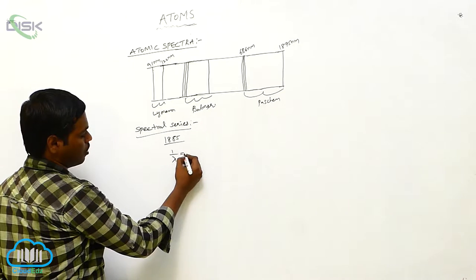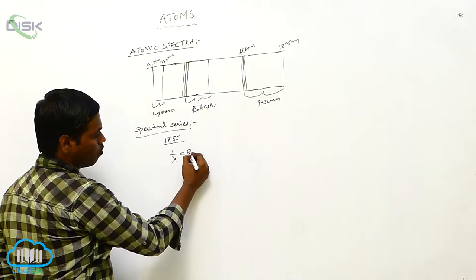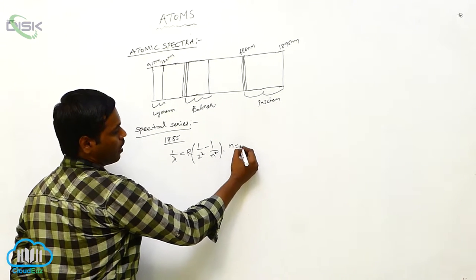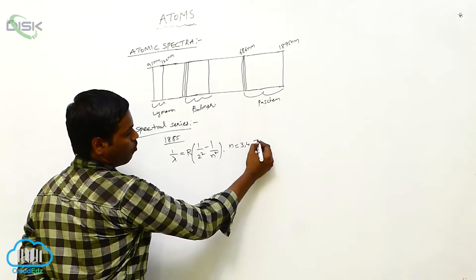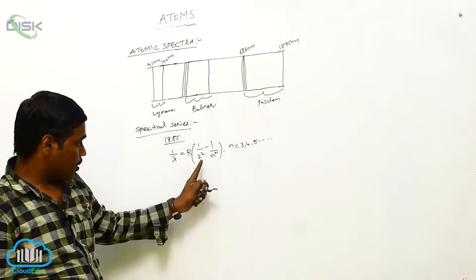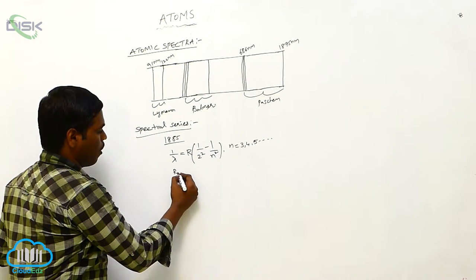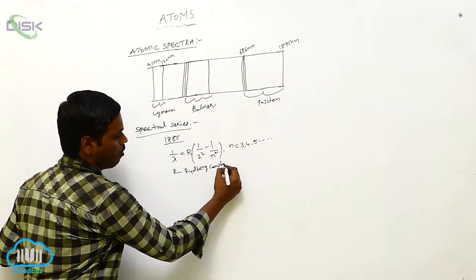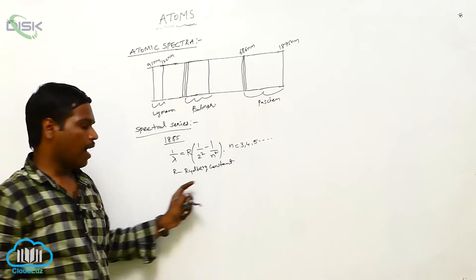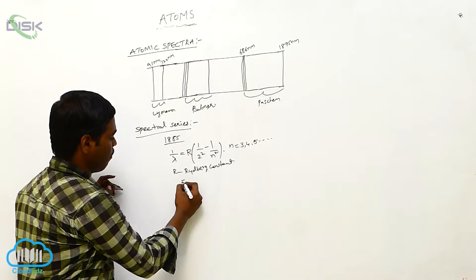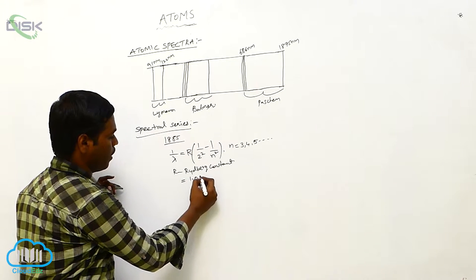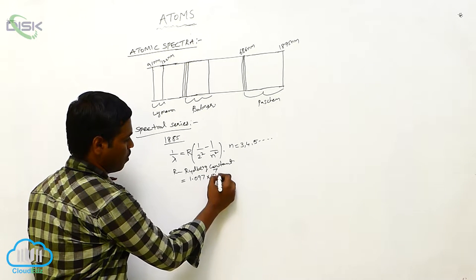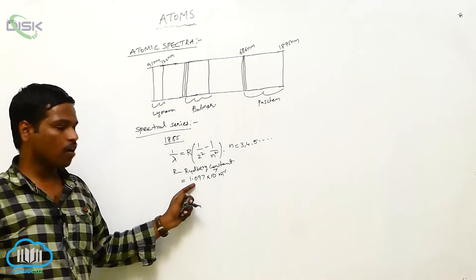Johann Jakob Balmer gave an empirical formula for studying this spectral series: 1/λ = R × (1/2² − 1/n²), where n = 3, 4, 5, and so on. Here R is called the Rydberg constant, and its value is 1.097 × 10⁷ meter inverse.